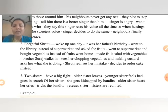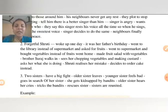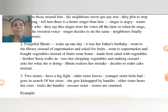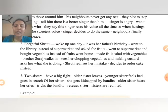You can write the story like: Once upon a time there is a girl who lives in a town. Her name is Shruti. She is a very good daughter but she is forgetful — every time she forgets what she has to do and does another thing. One day she woke up and forgot what to do on her father's birthday.